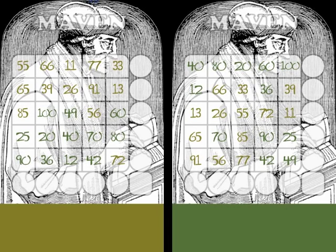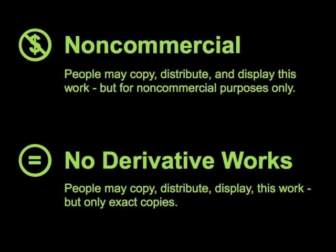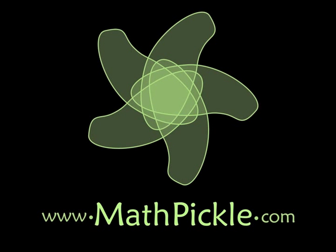You might want to get your students to score this sample set of games before they play a game themselves. To make the game easier, you can allow them to say the same number more than once. To make it more difficult, you might experiment with larger numbers or Greatest Common Prime Factor Bingo.